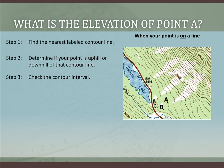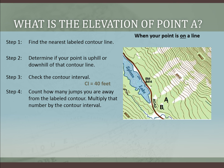Next, we check the contour interval. We already looked at the map and found that the contour interval is listed as 40 feet. Next, we count how many jumps we are away from the labeled contour and multiply that number. Starting at 8,800 — here's the bold line — I'm jumping 1, 2, 3, 4, 5, 6, 7, 8 times to get to A. So, 8 jumps times the 40-foot contour interval — that's 320 feet.